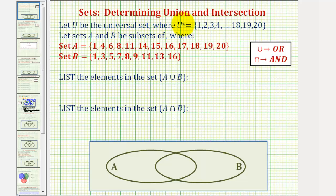In this example, we're given the universal set contains the whole numbers one through twenty, and sets A and B are subsets with the elements given here.